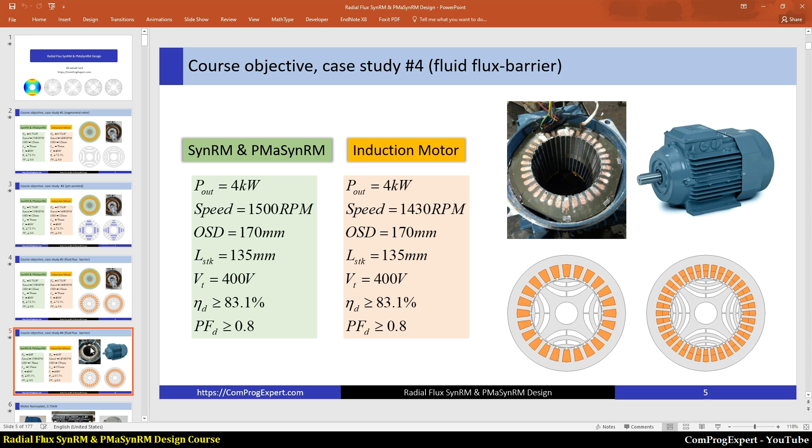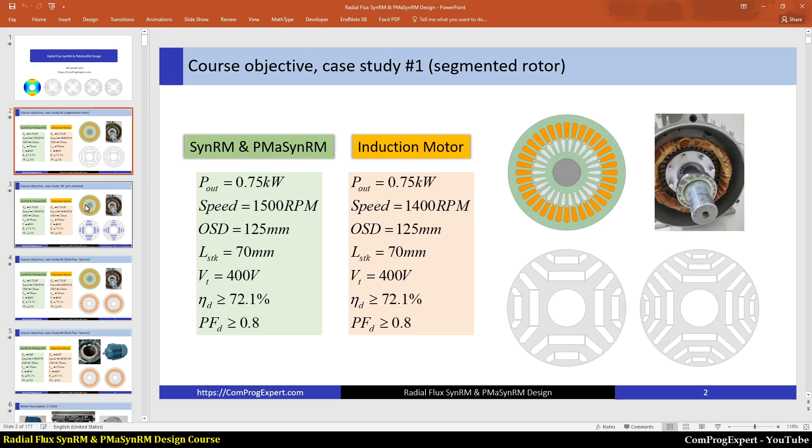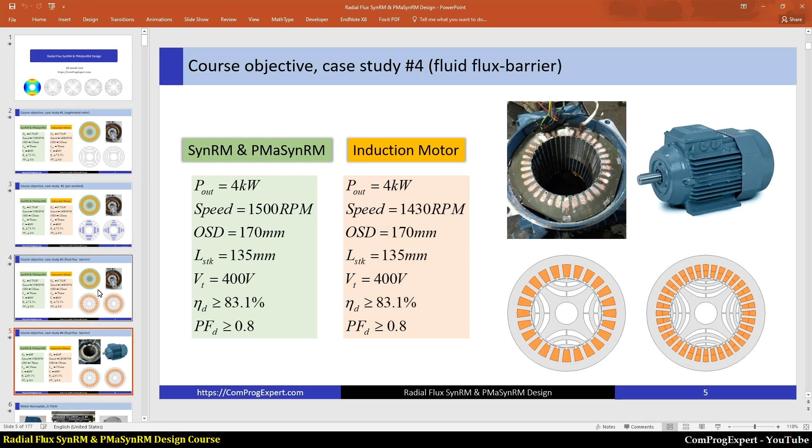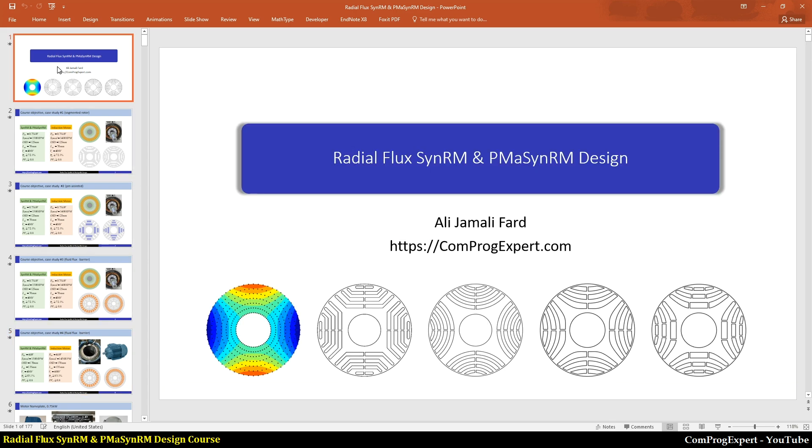We will consider another example, another induction motor with a higher output power to evaluate our procedure. So in this course, we will study these four examples. And this is not an introductory course because we will do deep optimizations to reduce the torque ripple, improve the average torque and so on.